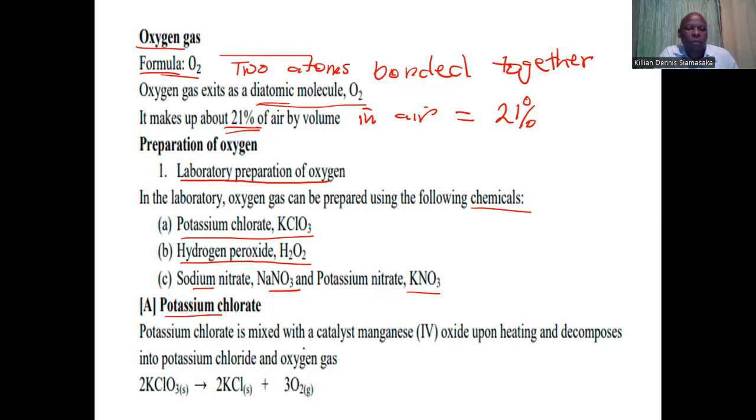Potassium chlorate, when it decomposes, requires the use of a catalyst known as manganese IV oxide. Manganese IV oxide reduces the activation energy.